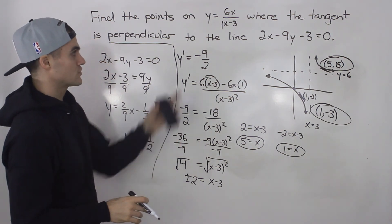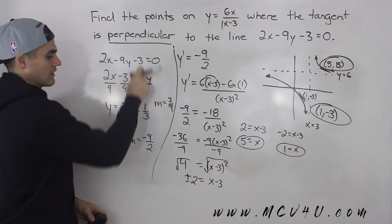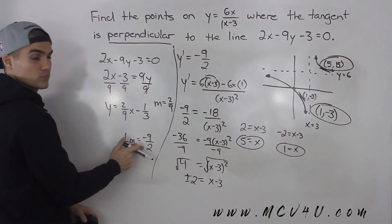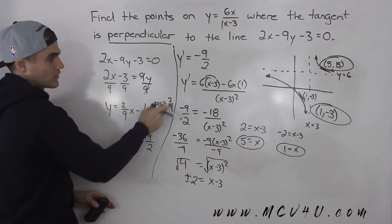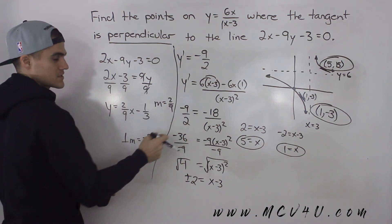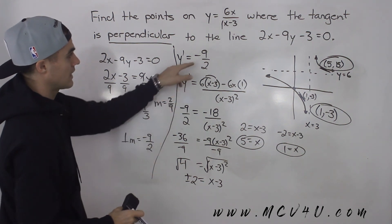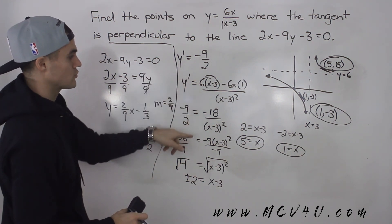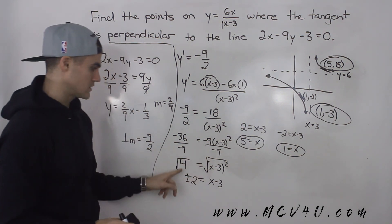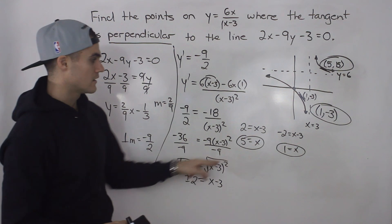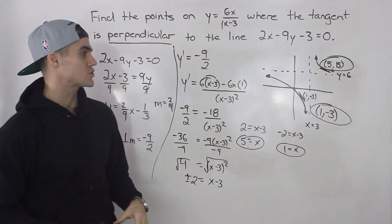To summarize: we found the slope of the given line was 2 over 9. Since we need the tangent to be perpendicular, we used the negative reciprocal slope of negative 9 over 2. If they asked for parallel, we'd use 2 over 9 instead. We set the derivative — found using the quotient rule — equal to negative 9 over 2, cross multiplied, and solved for x. Remember to take plus or minus when square rooting. That gave two x-values, and plugging them into the original function gave the two points.